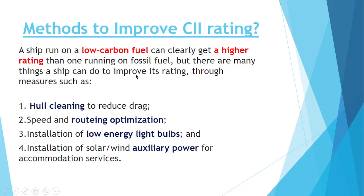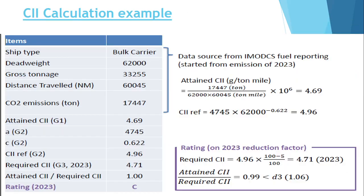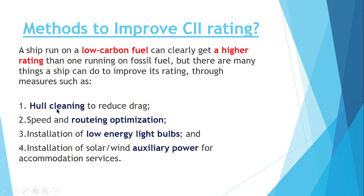How can you improve the CII rating? The CII is based on CO2 emission. If we can reduce CO2 emission, we can improve the CII rating. If a ship is running on low carbon fuel, it can clearly get a higher rating than one on fossil fuel, because low carbon fuel has less carbon compared to fossil fuel. Fossil fuel contains a large amount of carbon, hence a lower rating — C or D — while low carbon fuel would achieve A or B.